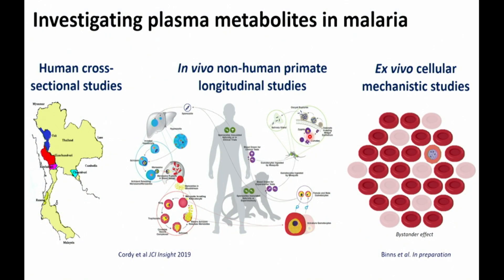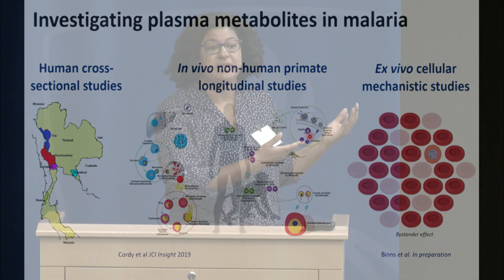Today I want to talk about work we published in 2019 during my postdoc with Mary Galinsky at Emory University, where we looked at this question in in vivo systems — both human cross-sectional studies and in vivo non-human primate studies. After that, I'll transition to the work I'm doing in my lab now at Wake Forest University, where we're focusing mechanistically on some of the ways in which changes in the bloodstream might impact disease severity.